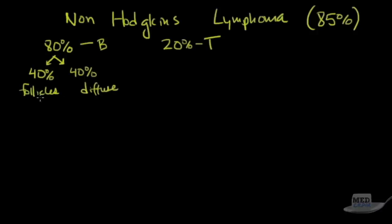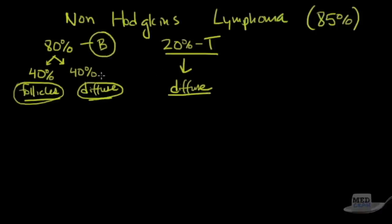Of those 80% B cells, 40% are from follicles and 40% are diffuse. Follicles means they actually look like the parts of lymph nodes, which is good because that's a mature effect of the lymph tissue, whereas if it's diffuse that's not good - it's more primitive and not as differentiated. The 20% of T cells are always diffuse. Why? Because B cells make up your lymph nodes and T cells don't.